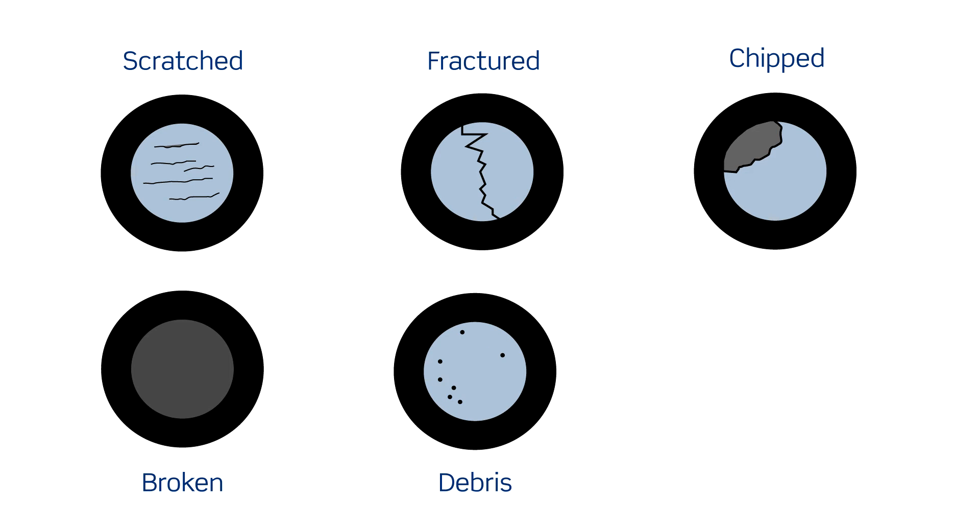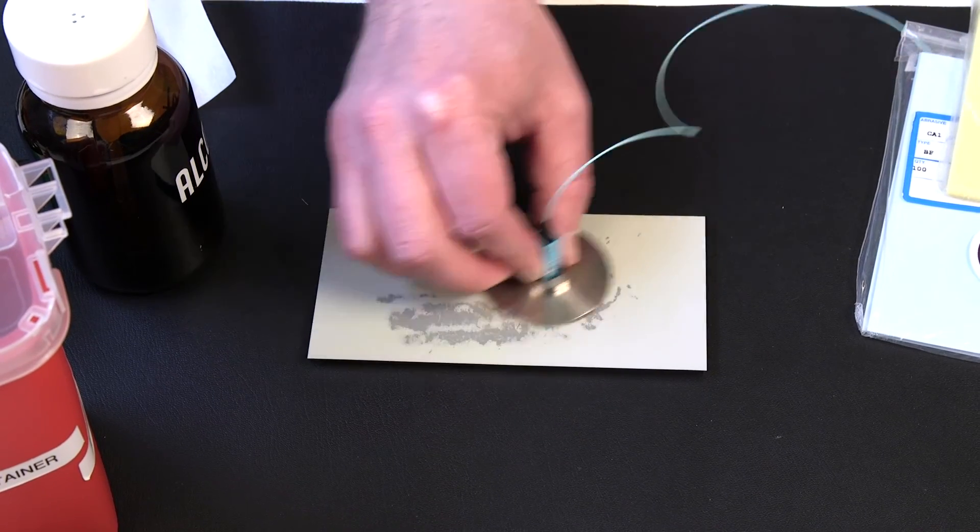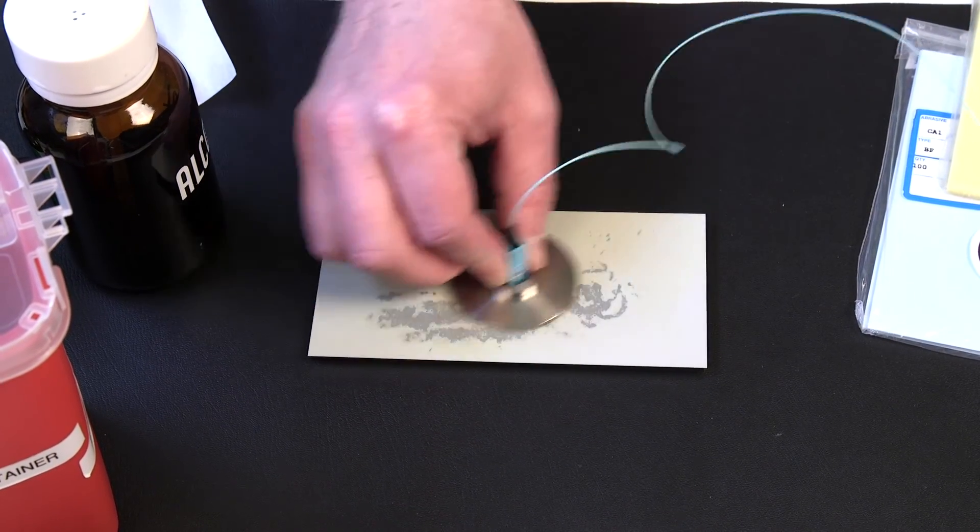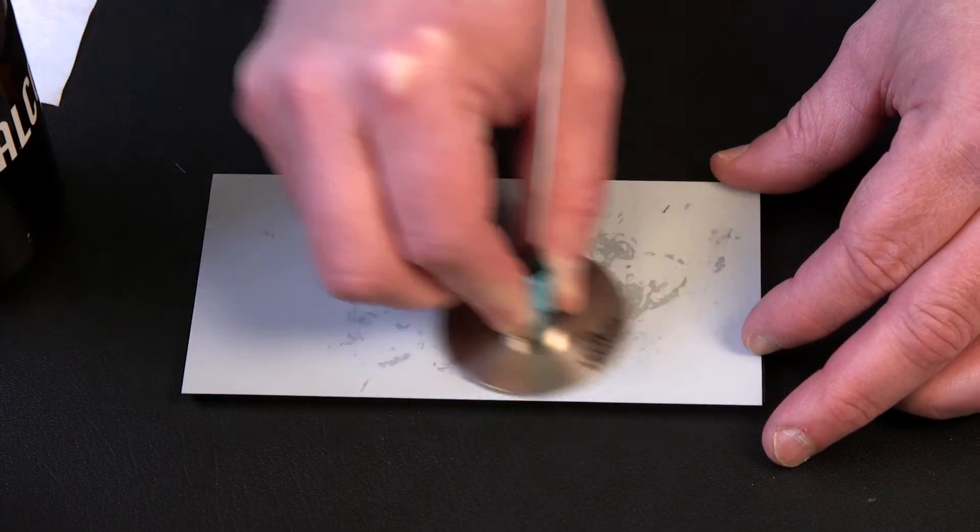Remove any debris with a lint-free wipe or dry cleaning tool, then re-inspect. If any adhesive or debris remains on the connector, repeat polishing with the 3 micron and dot 3 micron film and re-inspect. Do not over polish.